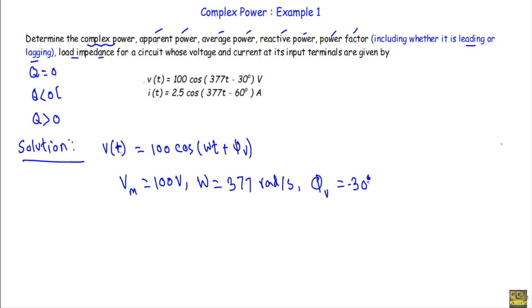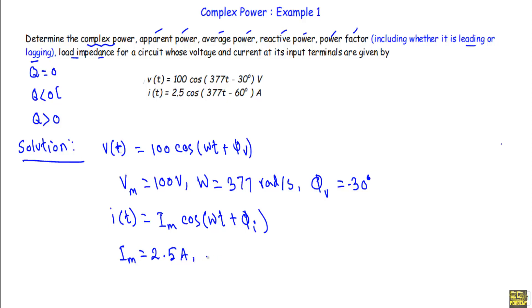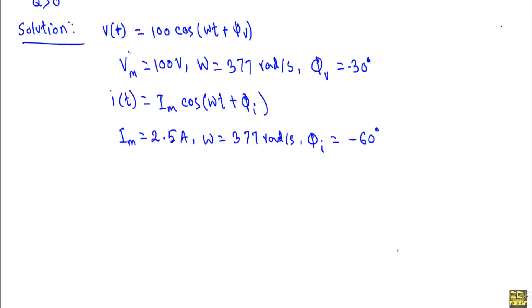Now comparing i(t) with the standard sinusoidal current equation i(t) = Im cos(ωt + φi), I get the maximum value of current Im = 2.5 amperes, ω = 377 radians per second, and the current phase angle φi = −60 degrees.